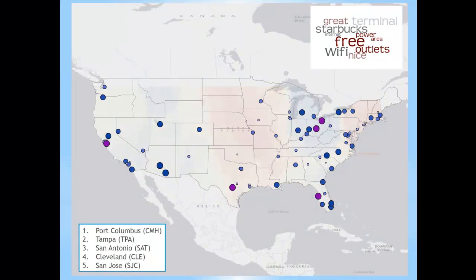Getting more interesting, when you start looking at things like Wi-Fi, Starbucks, and those kinds of amenity topics, the purple dots represent places that score highly on this. I was surprised I didn't see SFO in this. But Columbus, Tampa, San Antonio, Cleveland, and San Jose were interesting standouts.